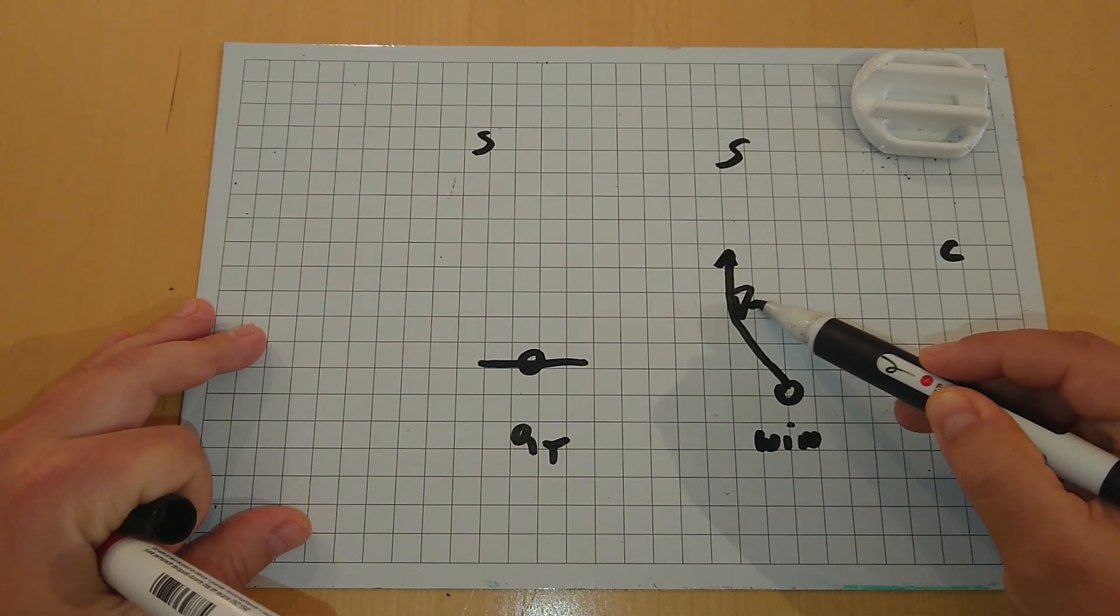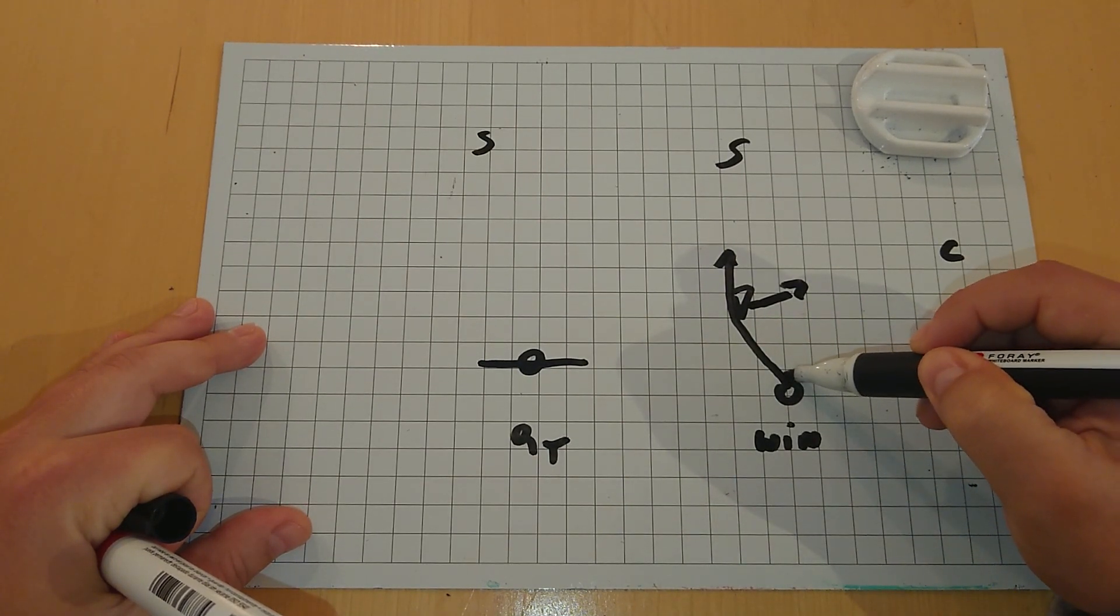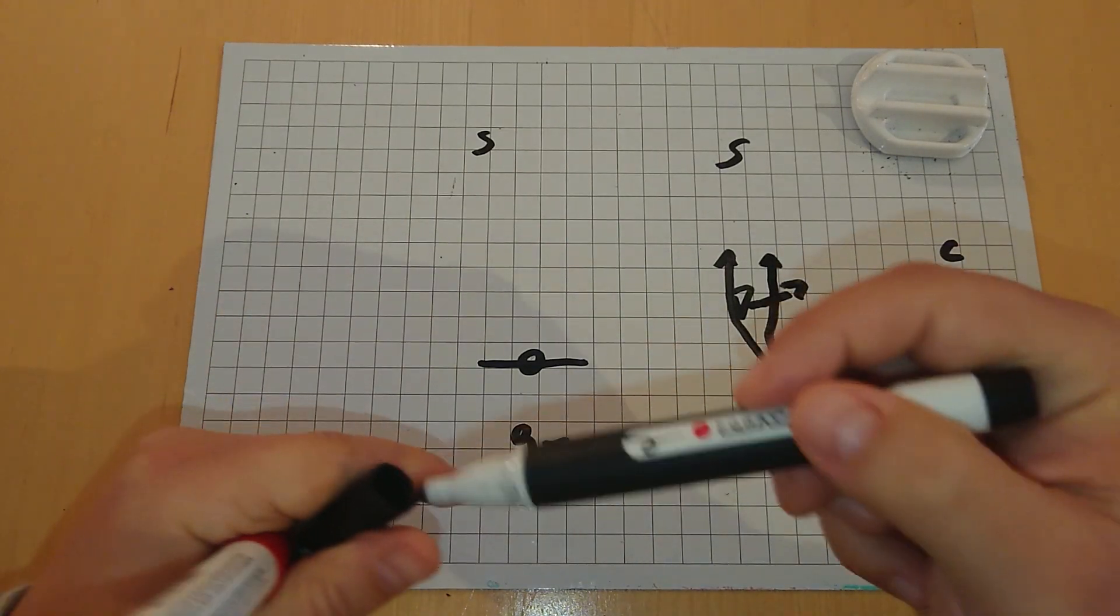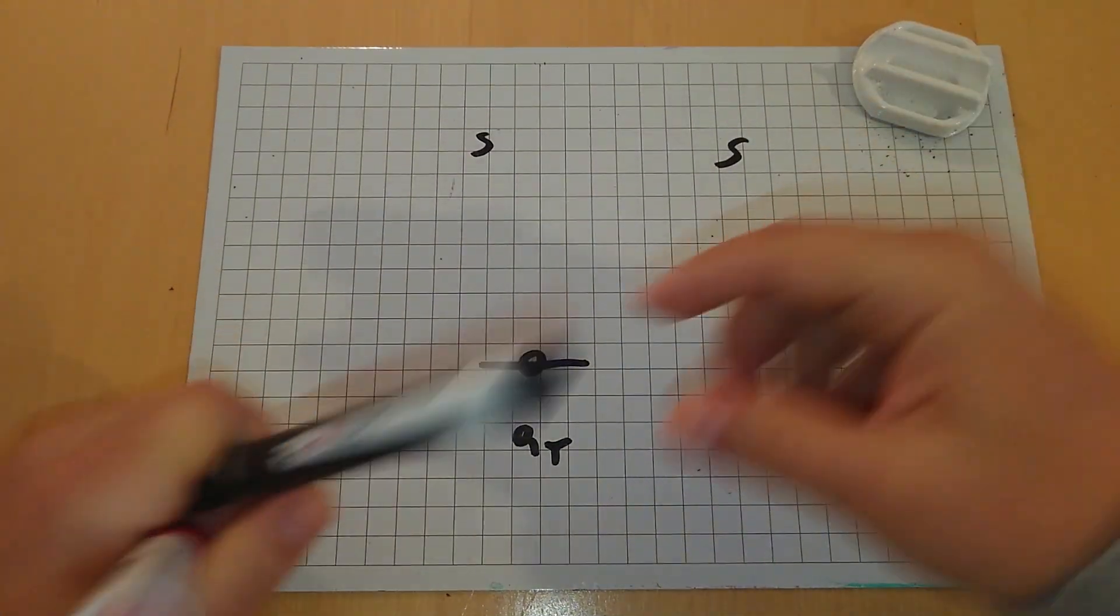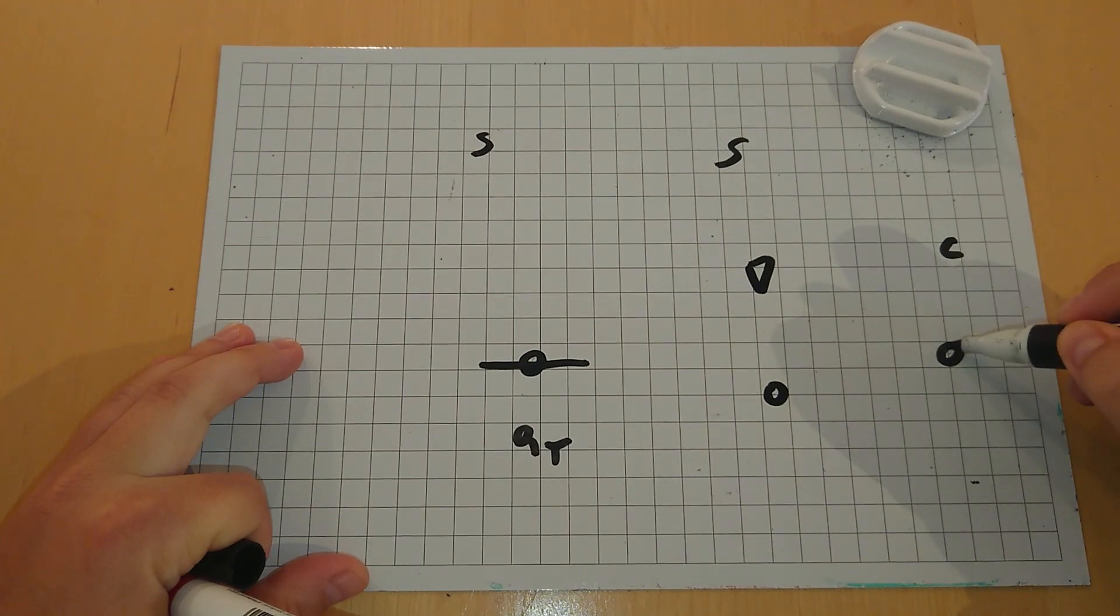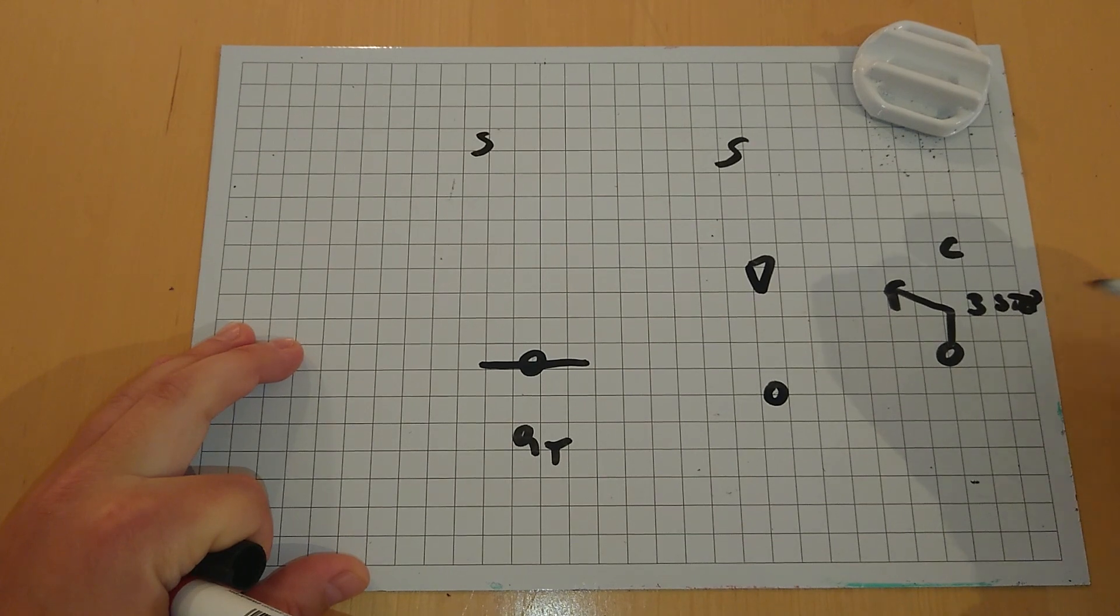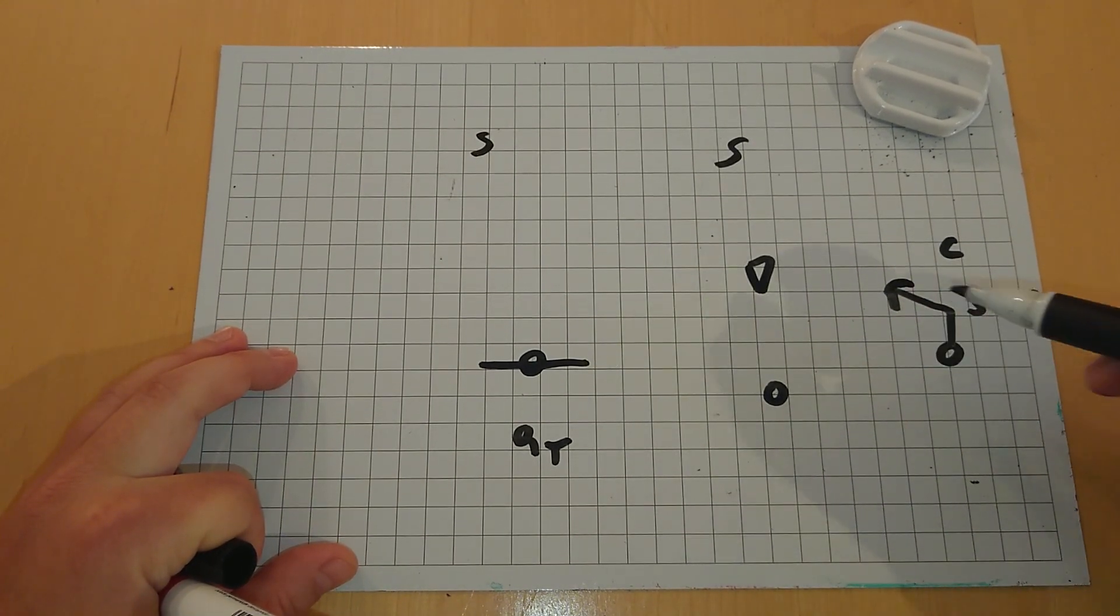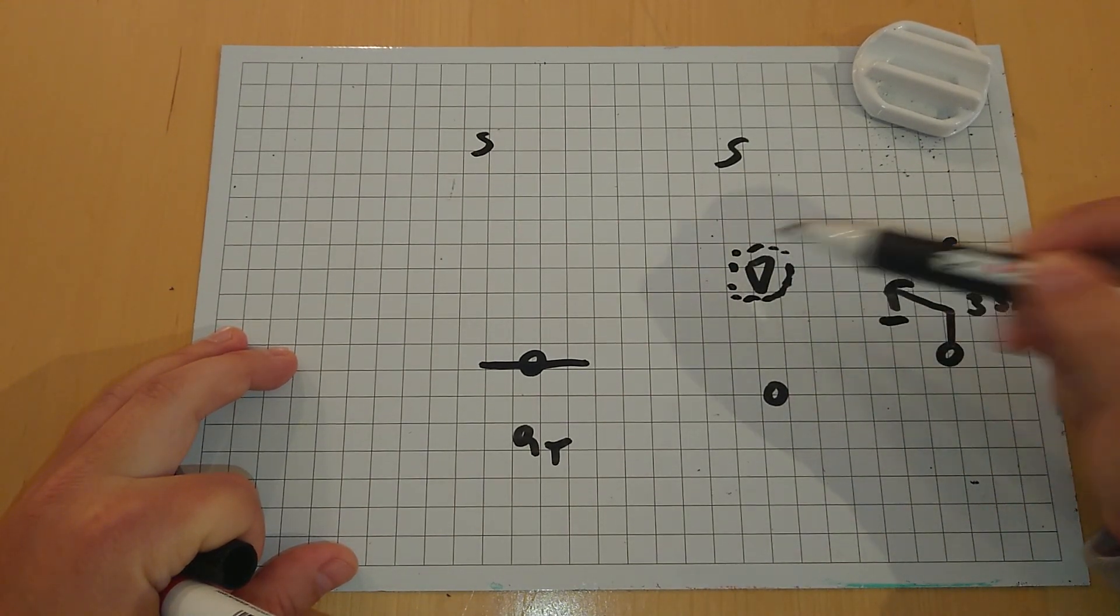If the outside linebacker decides to move outside, this route will adjust and still run as tight as possible through the inside shoulder of this linebacker. Why is it so? Our base rule is that this is a three-step slant, very important, three-step slant.